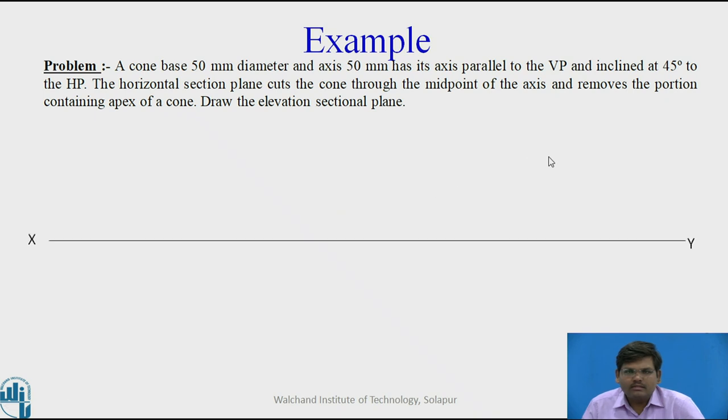First the XY line. Now as the cone is inclined at 45 degrees to HP, the initial condition will assume that the cone is resting on its base on HP. So depending upon the second condition, we are going to finalize the first stage. So first stage will be the cone is placed on HP with its base in HP and its axis parallel to VP.